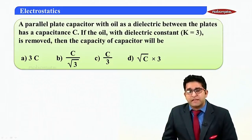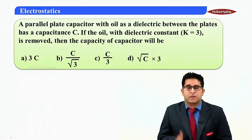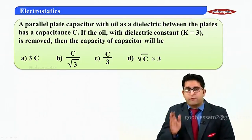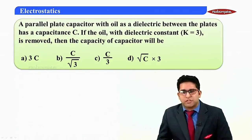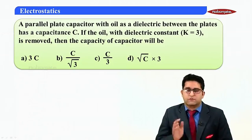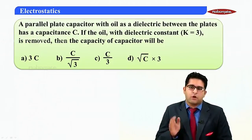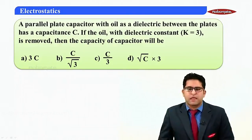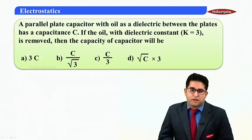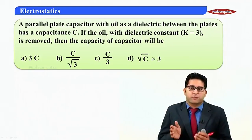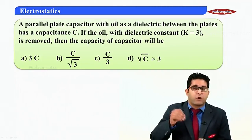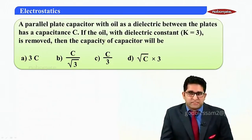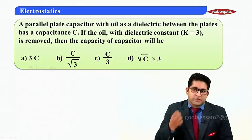The first question says: a parallel plate capacitor with oil as a dielectric between the plates has capacitance C. If the oil with dielectric constant K equal to 3 is removed, then the capacitance of the capacitor will be — option A: 3C, option B: C by root 3, option C: C by 3, option D: root 3 times C.